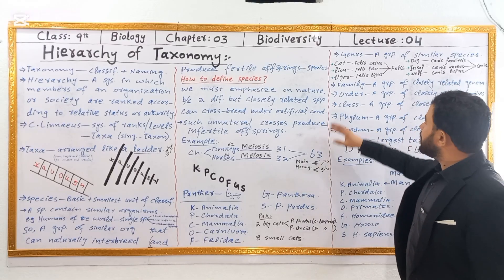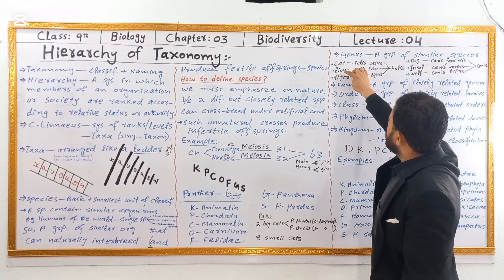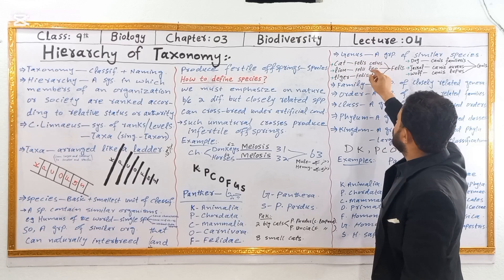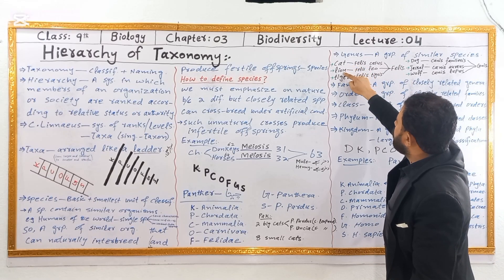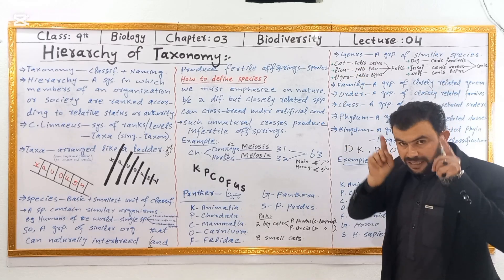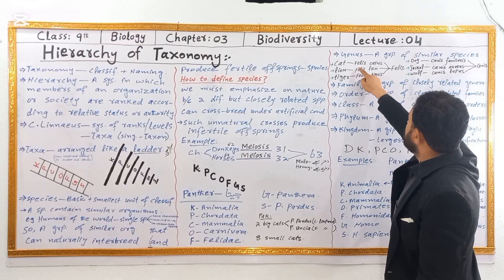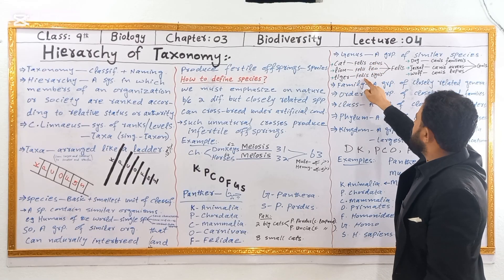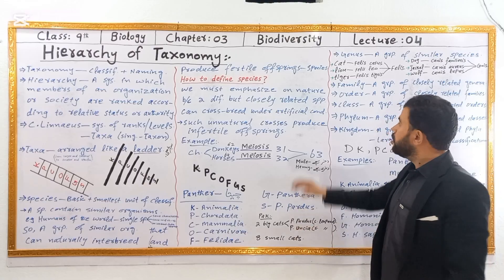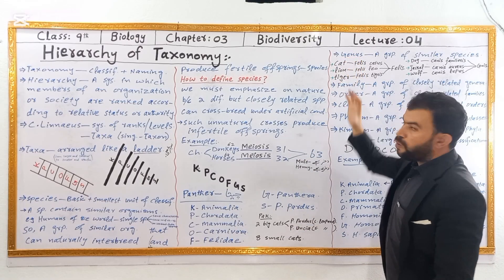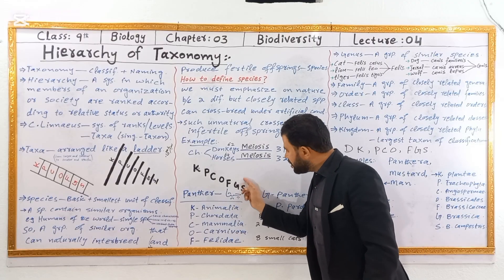A genus is a group of similar species. For example, lion and tiger are similar species within the same genus. They have similar characters. Humans cannot interbreed with other species. The genus contains similar species, and other species can also belong to the same genus.